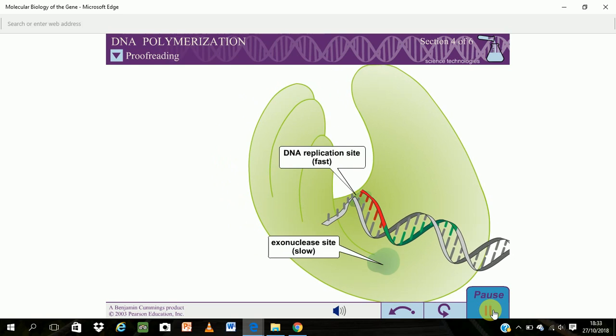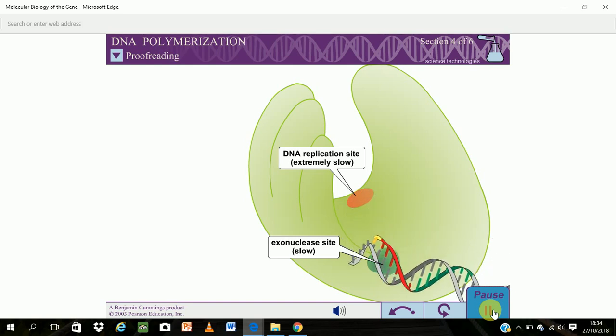In the rare event that a mismatched base pair is added, the distorted geometry of the substrate causes the replication rate to slow dramatically. The palm domain is now not able to make contacts with the minor groove, and consequently the primer template junction is free to move about and interact with the exonuclease site.